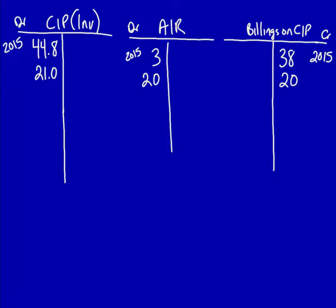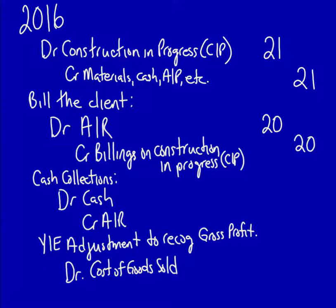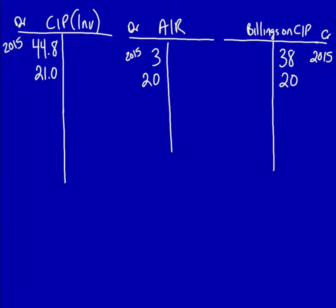Now we have to record the cash that the client has actually paid. We see the total cash collected to date: the $54 includes the $35 from last year. We've got to deduct the $35 from the $54 in order to get the amount of cash collected in this year: $19. Let's do the entry — cash collections: debit cash $19, credit accounts receivable $19. Let's update the T-accounts: accounts receivable goes down $19. We're not tracking the cash account, so we'll just update accounts receivable.